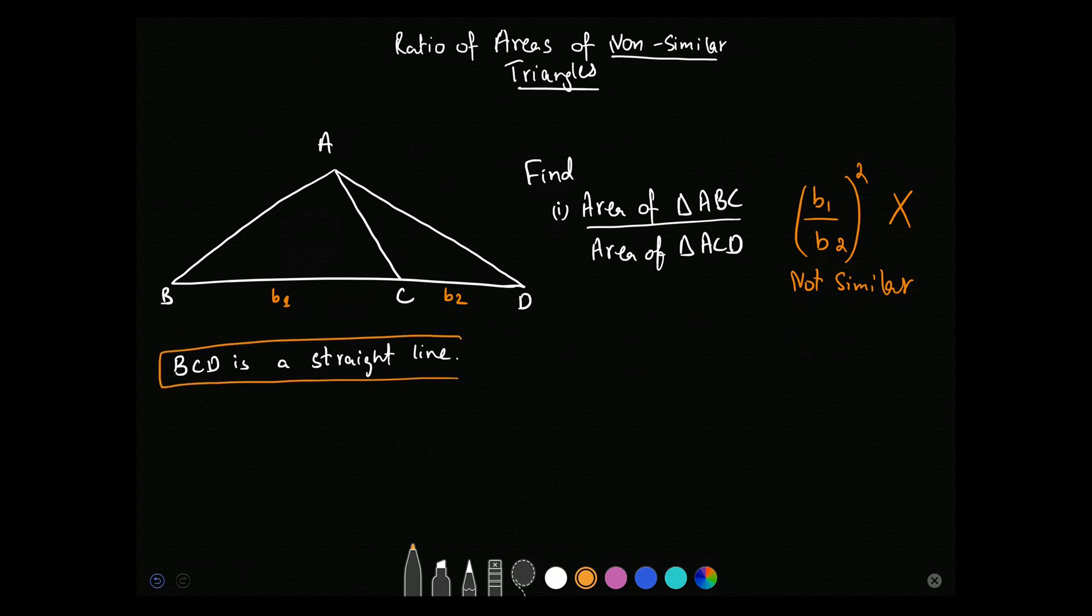BCD being a straight line means that the height of these two triangles are the same because they are on the same base level. And note that where they meet, that is also a common point. That point is A.